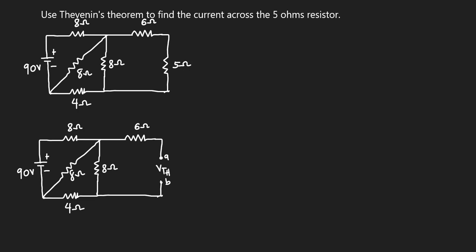To solve this question, the first thing I would do is solve for the Vth. Then after finding the Vth, we find the Rth, which is the Thevenin resistance. To find the Thevenin voltage, I will redraw the circuit.